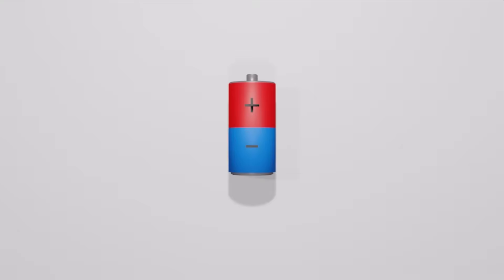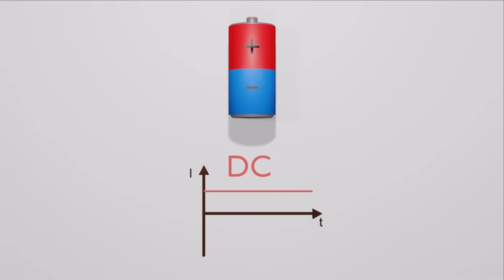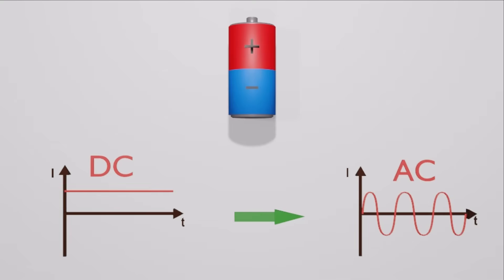Just imagine you have a DC battery that can supply direct current, and someone taps you on the shoulder and asks you to produce AC instead. How would you do it?